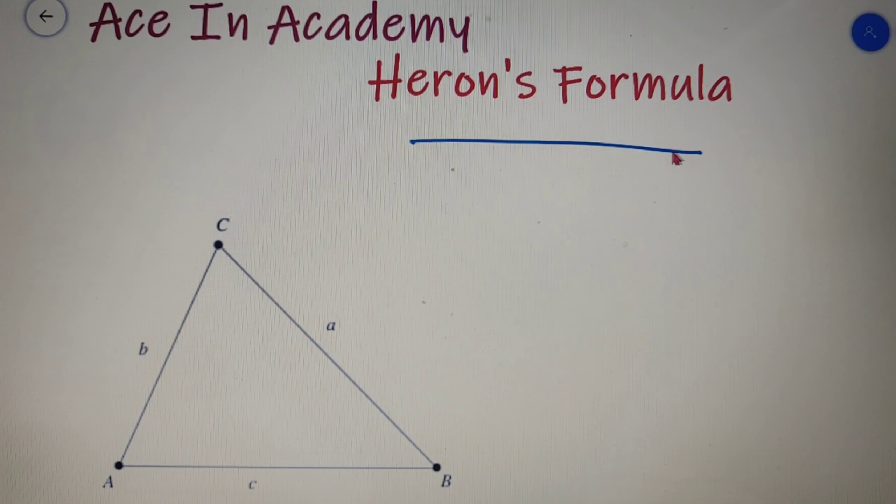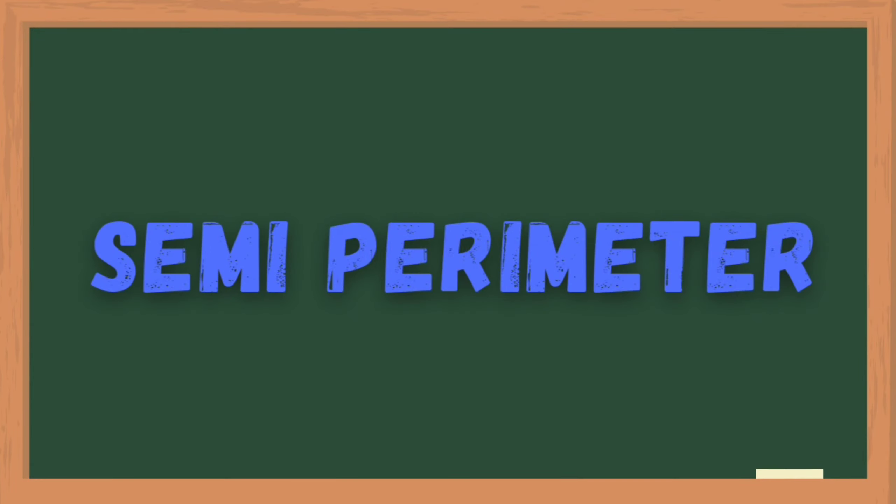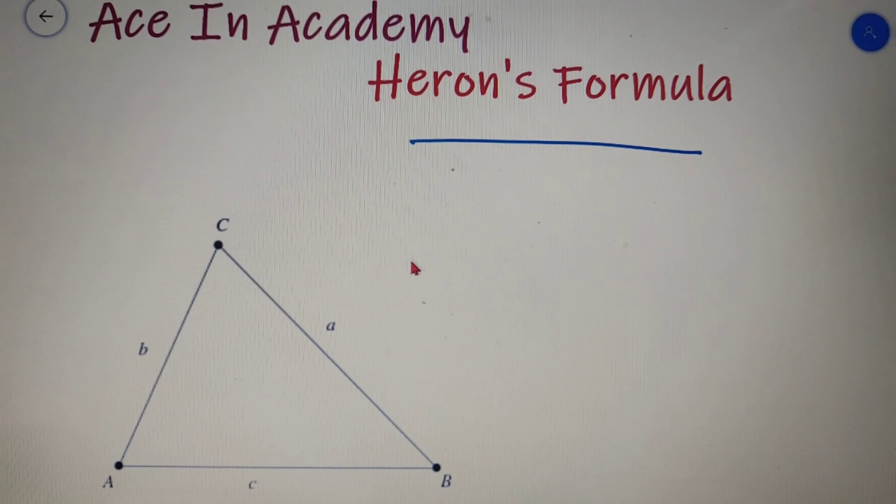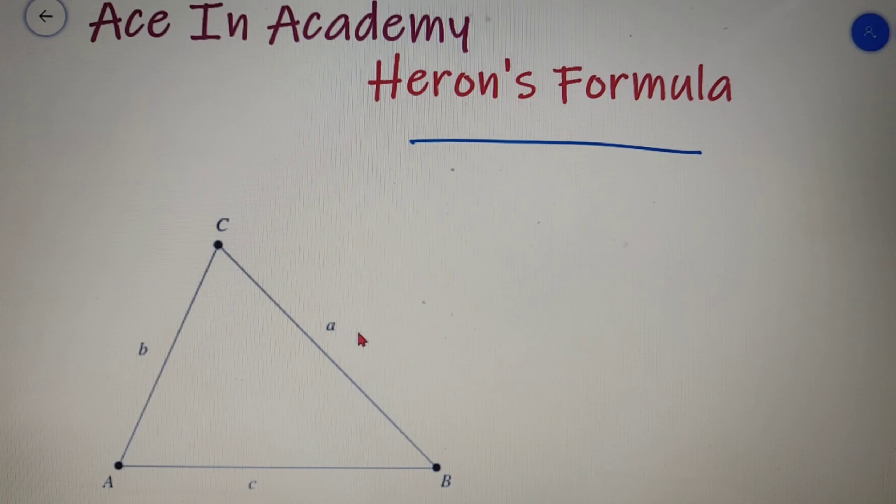Now before moving on to Heron's formula, we have to understand what is a semi-perimeter. As you can see, we have taken a triangle with vertices A, B, and C respectively, with the length of side AB as c, side BC as a, and side CA as b.